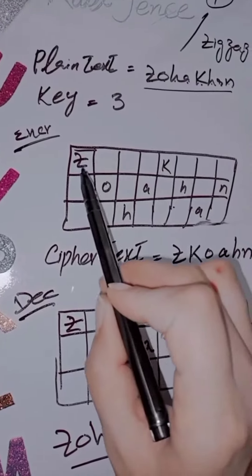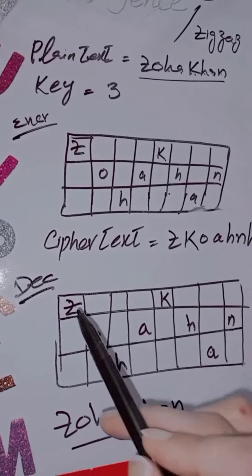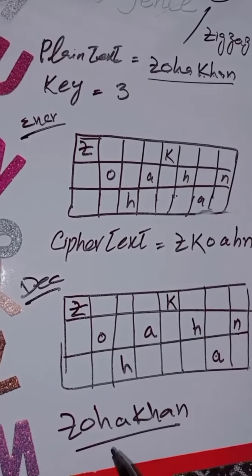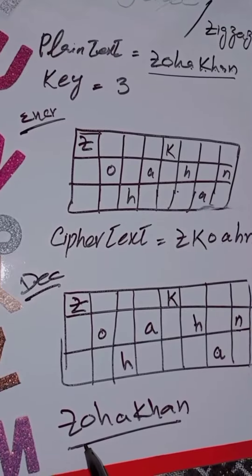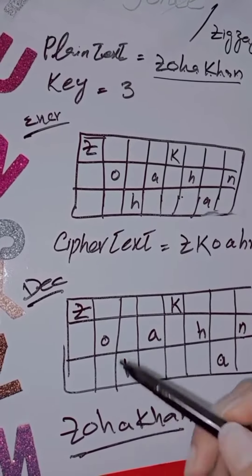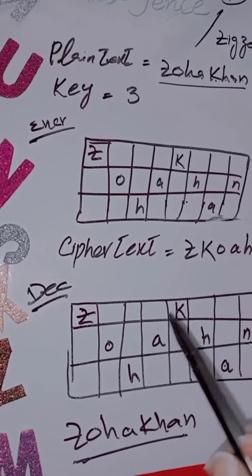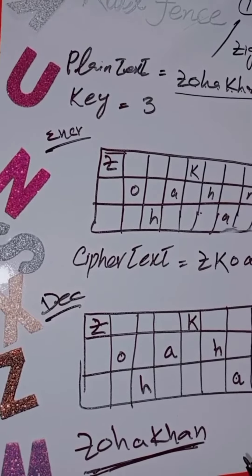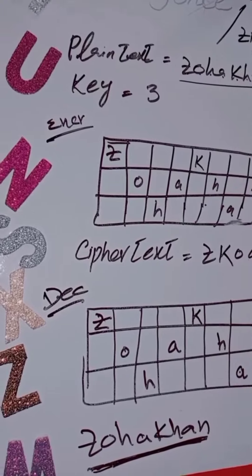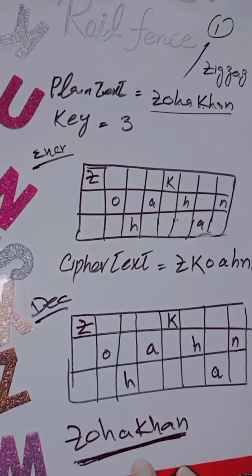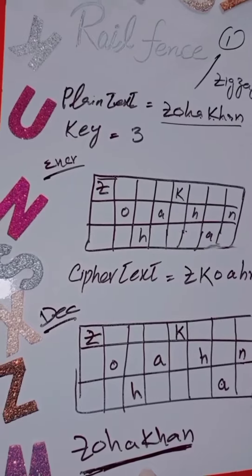How do we write it? Row-wise. When we decrypt again, we write it down row-wise, and when we write it again, it looks like our authentic message. If a sender sends it and the receiver gets the same, it is authentic and accurate — so this is the simple Rail Fence cipher.